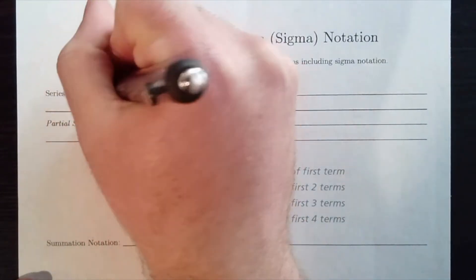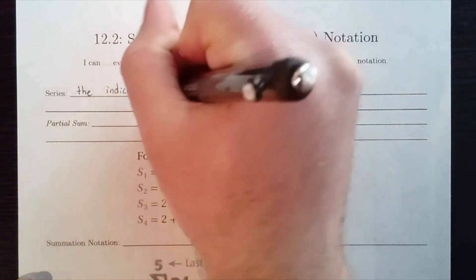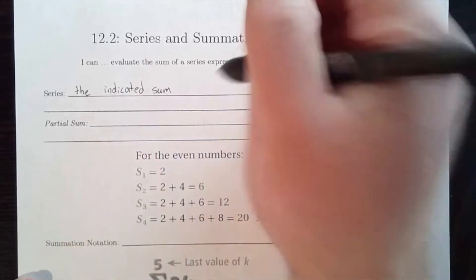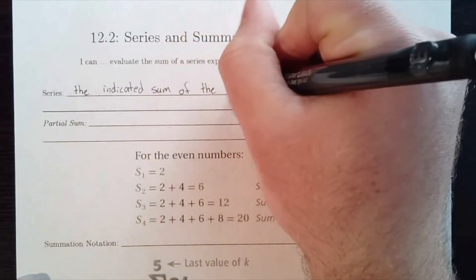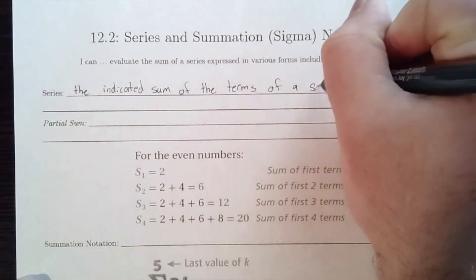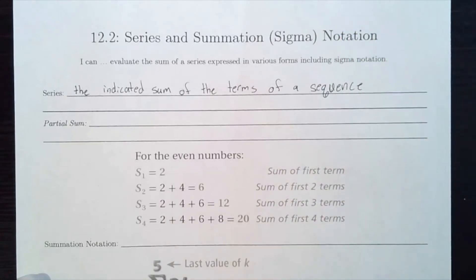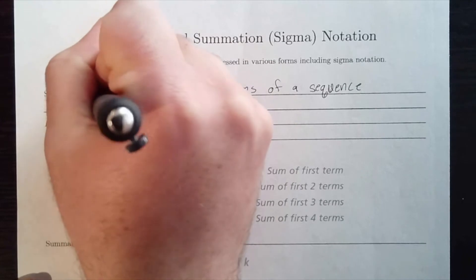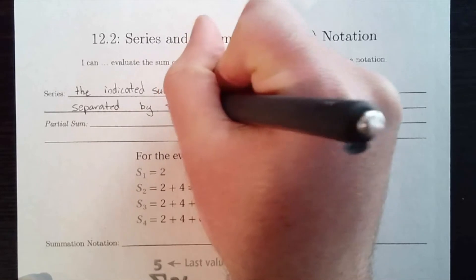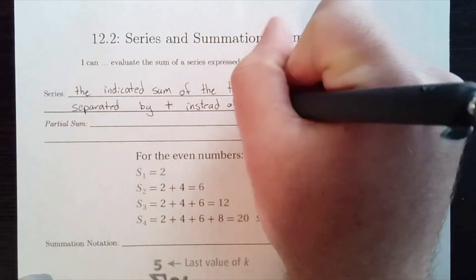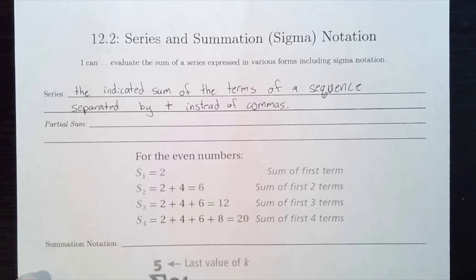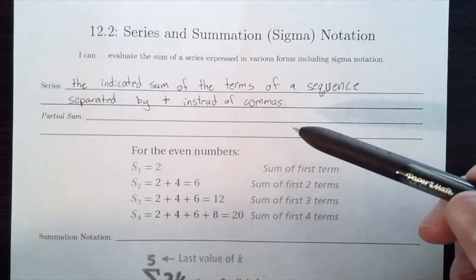A series is going to be what we call the indicated sum. We say 'indicated' because there are lots of different sums for sequences — different numbers of terms we can include. So it's the indicated sum of the terms of a sequence. Really, we're just separating terms by addition signs instead of commas. Switching from the comma to addition means we're actually doing something mathematically with those numbers.